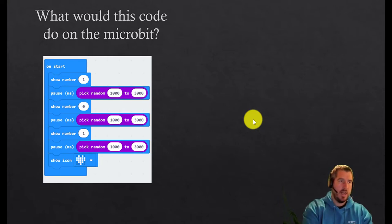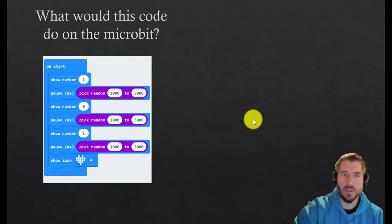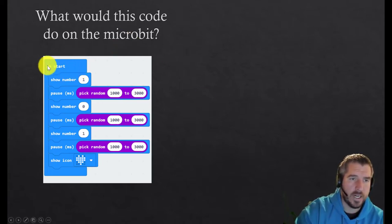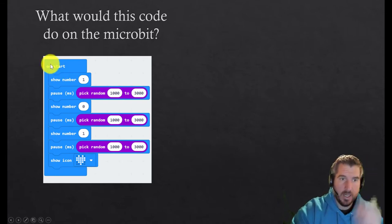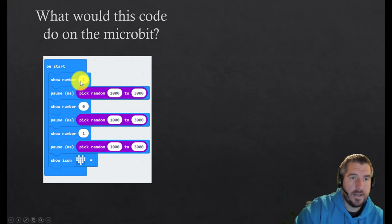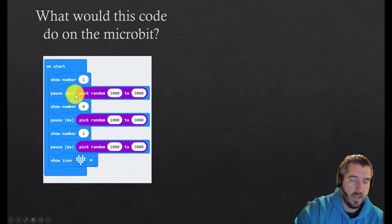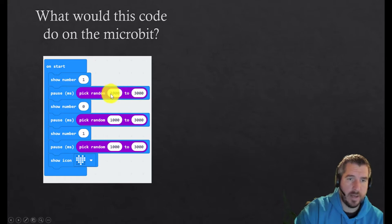Okay, so hopefully you paused it and now you're back. So let's look at what this is going to do. First thing to notice is it's on start so it's not going to repeat at all. It's just going to do this once because it doesn't have the forever thing there, right. In this case it's going to show the number one and then here's the kicker here, it's going to pause for a random amount of milliseconds. A millisecond is just a thousandth of a second. So since we're going to pick a random number between 1000 and 3000, it's basically going to pause for a random amount of seconds from one to three seconds. Then it's going to show the number zero and do the same thing, then it's going to show the number one and do the same thing, and then it's just going to show a heart to say yep we're done.